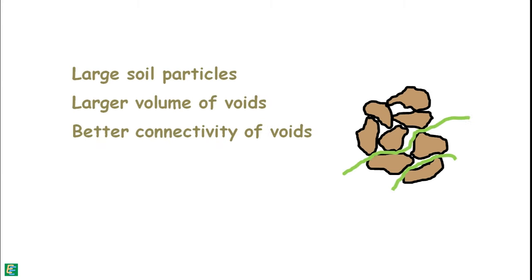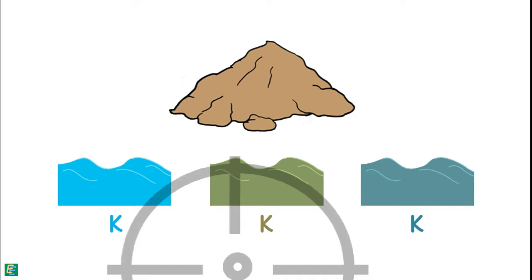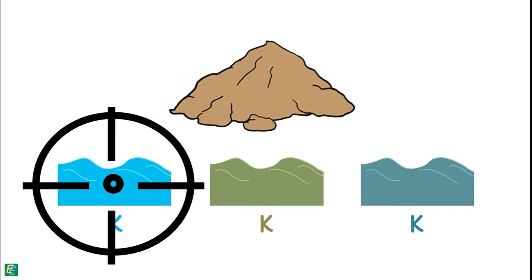Gravel particles are large. Larger the soil grains, larger will be the volume of voids and better will be the connectivity of those pores. Consequently, large amount of water may flow through them easily and higher will be the flow of water, which means higher is the permeability of soil. A soil has different values of permeability for different liquids, but we will focus only on soil's permeability with water.